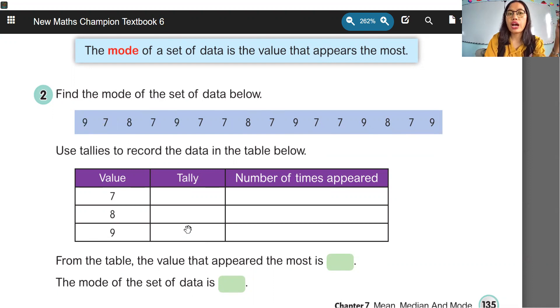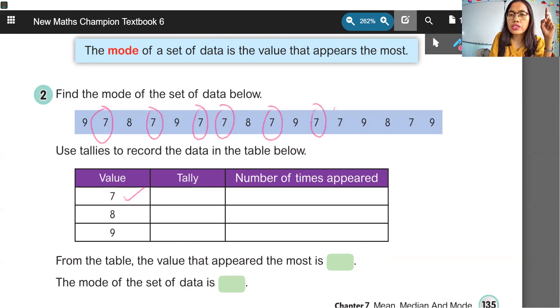And then we have to count for each number appear how many times. Jadi kita harus hitung setiap number ini, number 7, how many times appears. Berapa kali muncul? It means we count together. Let's count together. From number, kita mulai dari angka yang paling kecil, number 7. From number 7, how many times? 1, 2, 3, 4, 5, 6, 7, 8. Oh, appears 8 times. So, write in here 8. We have a number of times appear is 8.